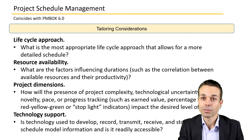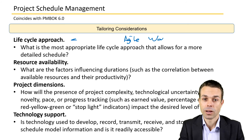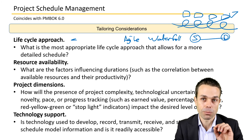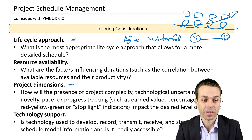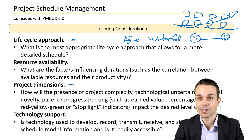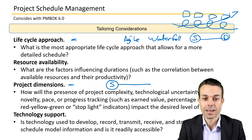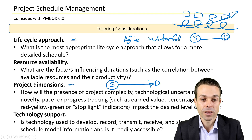Different tailoring considerations for Project Schedule Management include life cycle approaches — what's the most appropriate approach for a more detailed schedule? It could be agile, with iterative improvements and features delivered during iterations, or waterfall, where all scope is defined upfront and delivered in one big bang. Resource availability — who is available to do the work — also matters. Project dimensions such as complexity and uncertainty should be considered: high uncertainty may favor agile, while stable scope allows for upfront planning. Technology support is also a factor — is schedule information readily accessible to everyone who needs it?